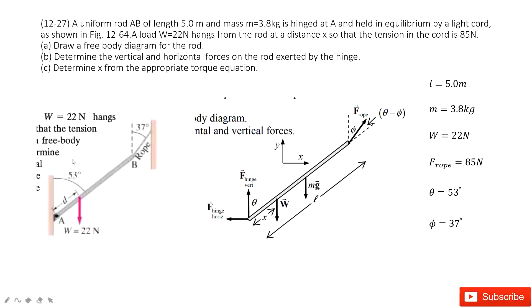Now let's look at this system. We have a uniform rod AB — the mass is given and the length is given. At point A, it is connected with a hinge. At point B, it is connected with a string, and the tension force is given. Also at a distance X along the rod, the rod is connected with an object. This object's weight is given: 22 newtons.